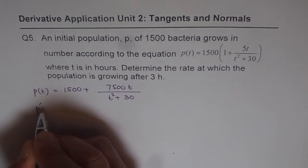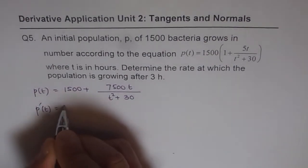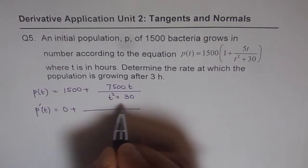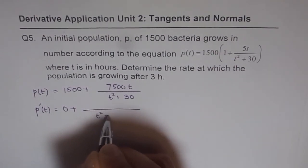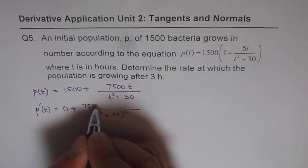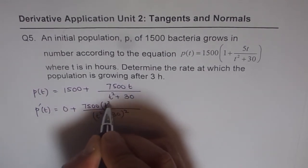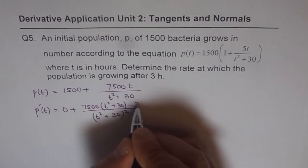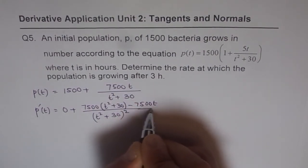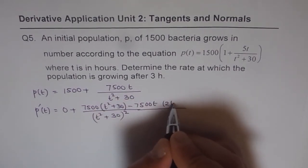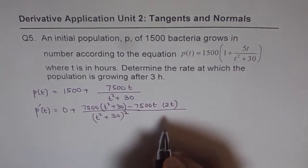So rate of change is P dash t, which is 0 for this, plus we can apply the quotient rule. So when you apply the quotient rule, you get t squared plus 30 whole square. And derivative of 7500t is 7500 times t squared plus 30 minus 7500t times derivative of denominator, which is 2t. So this is what you get.